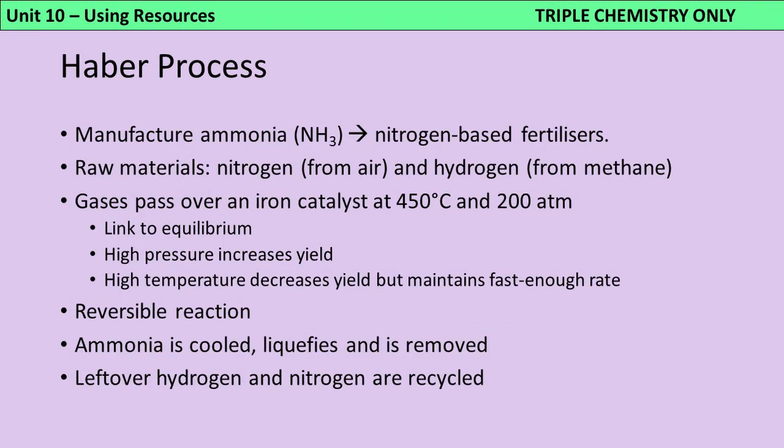Back in Unit 6, we talked about reversible reactions and equilibria, and the Haber process is a classic example. It's an industrial process used to produce ammonia, which is really important for making fertilisers, amongst other things. The raw materials are nitrogen, which we extract from the air, and hydrogen, most commonly extracted from natural gas or methane. These gases are mixed together and passed over an iron catalyst at 450°C and 200 atmospheric pressures.